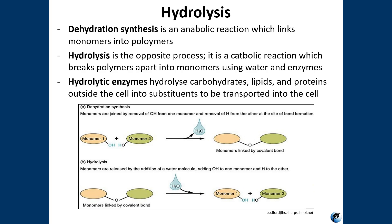Endoenzymes act inside the cell. Most of these are anabolic in nature, taking smaller molecules and building up macromolecules. Exoenzymes work outside the cell and are mostly catabolic because they're used in digestion — they break things down to make them small enough to pass the cellular membrane. Dehydration synthesis is the most common type of anabolic reaction, linking monomers together to make polymers. Hydrolysis is the exact opposite: a catabolic reaction which breaks polymers down into monomers using water and enzymes.